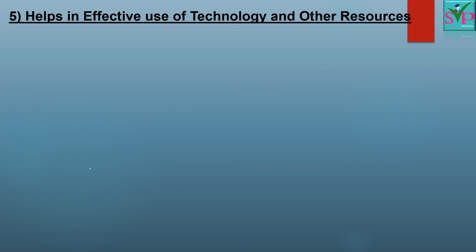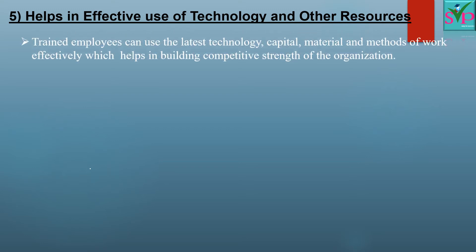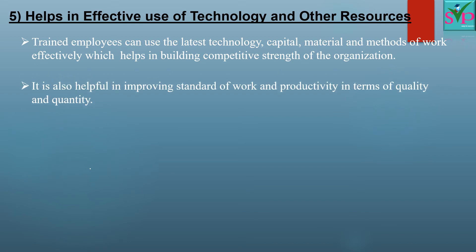Point 5: Helps in effective use of technology and other resources. Trained employees can use the latest technology, capital, material and method of work effectively, which helps in building the competitive strength of the organization. It is also helpful in improving the standard of work and productivity in terms of quality and quantity. If employees are trained properly for using the latest technology, material and standard method of work, the organization can lead in a modern competitive business world.